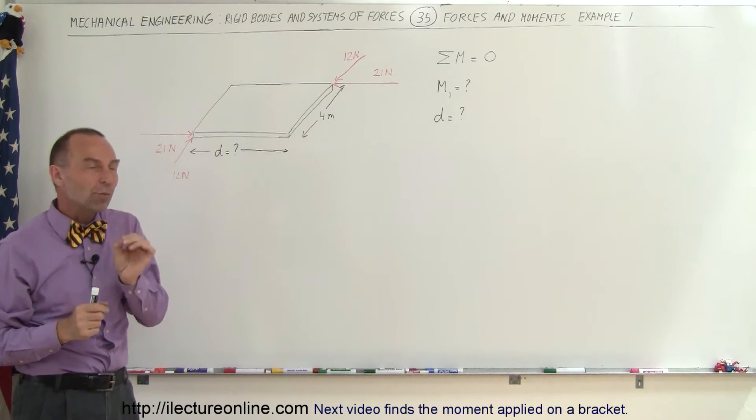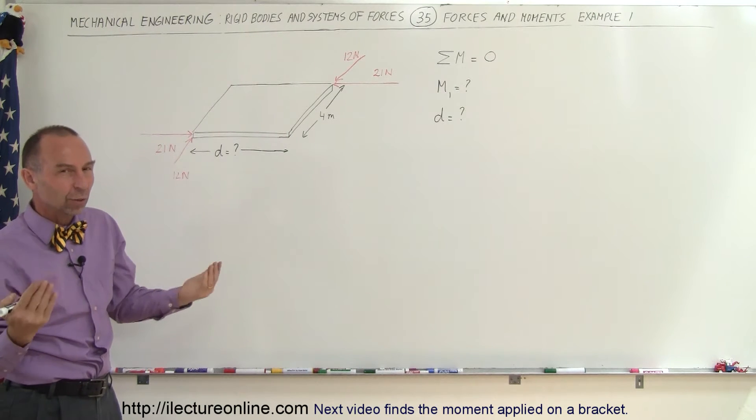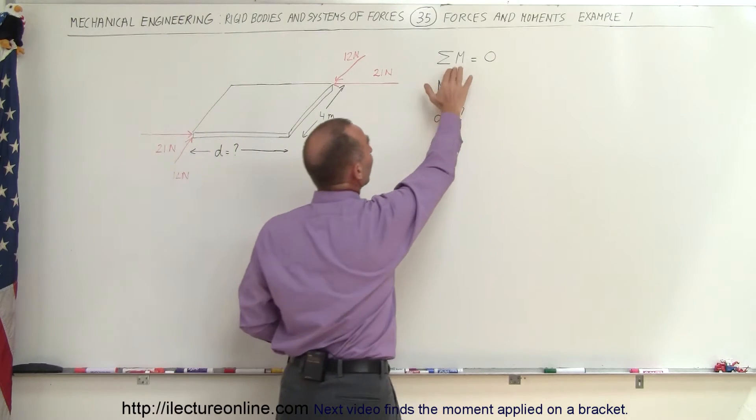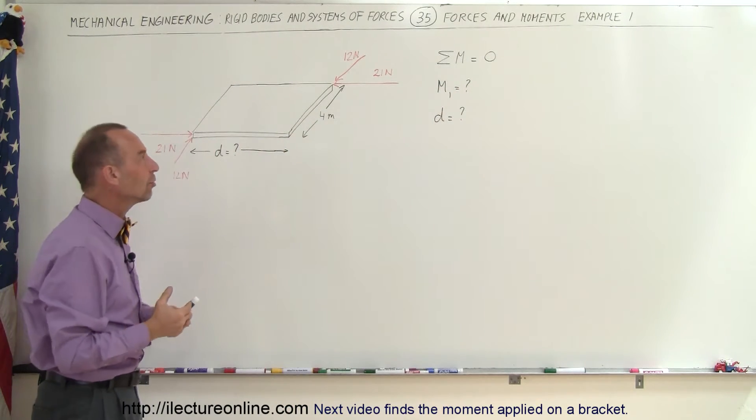Notice that the moments caused by these two couples is opposite in direction, so they will work against one another. On top of that, they tell us that the sum of the moments equals zero. That means it must be equal in magnitude, just opposite in direction.